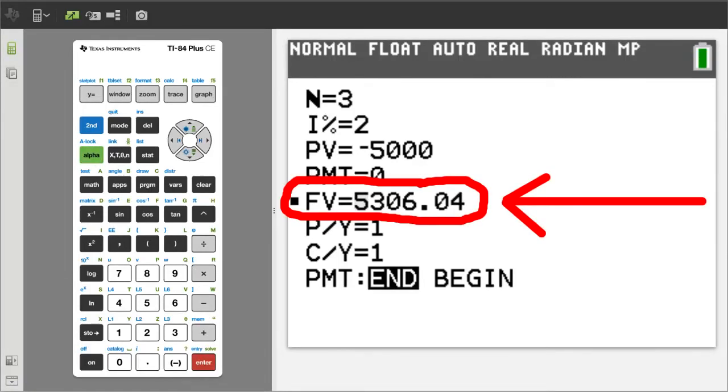And there is the answer. At the end of 3 years we will have a total of $5,306.04 in our bank account.